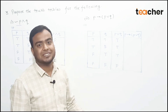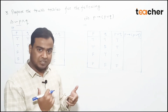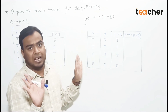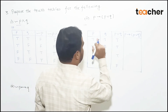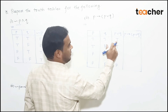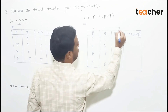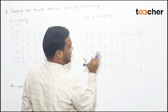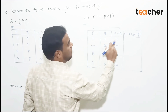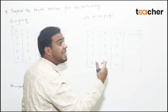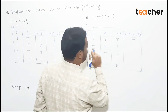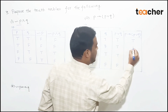Applying the implication rule: true implies true gives true, true implies false gives false, false implies true gives true, false implies false gives true. Filling in the final column we get T, F, T, T — wait, let me re-examine: the final column gives T, T, T, T.